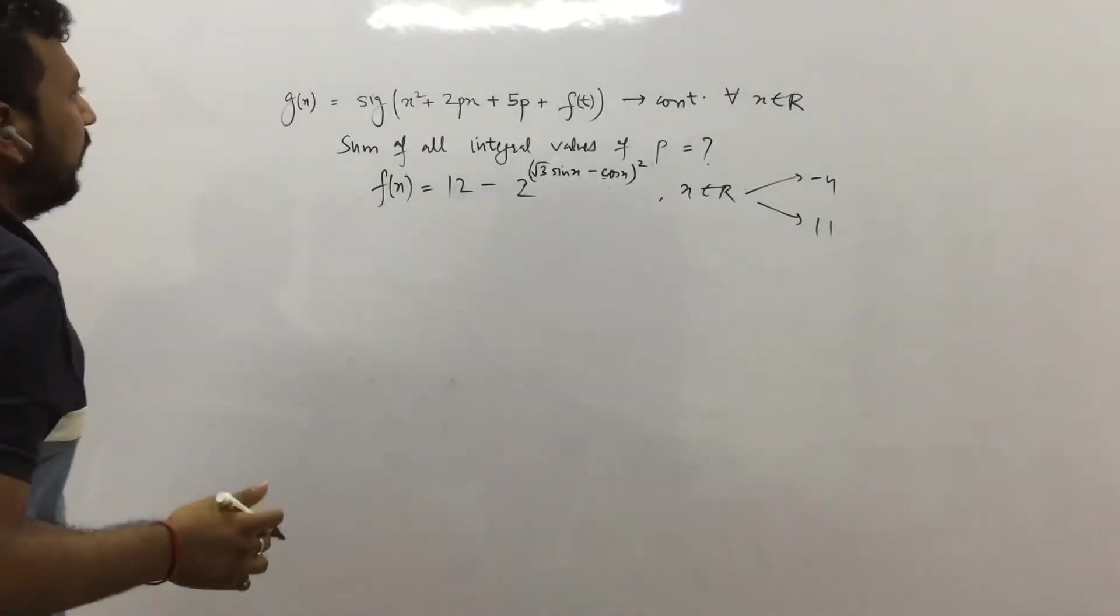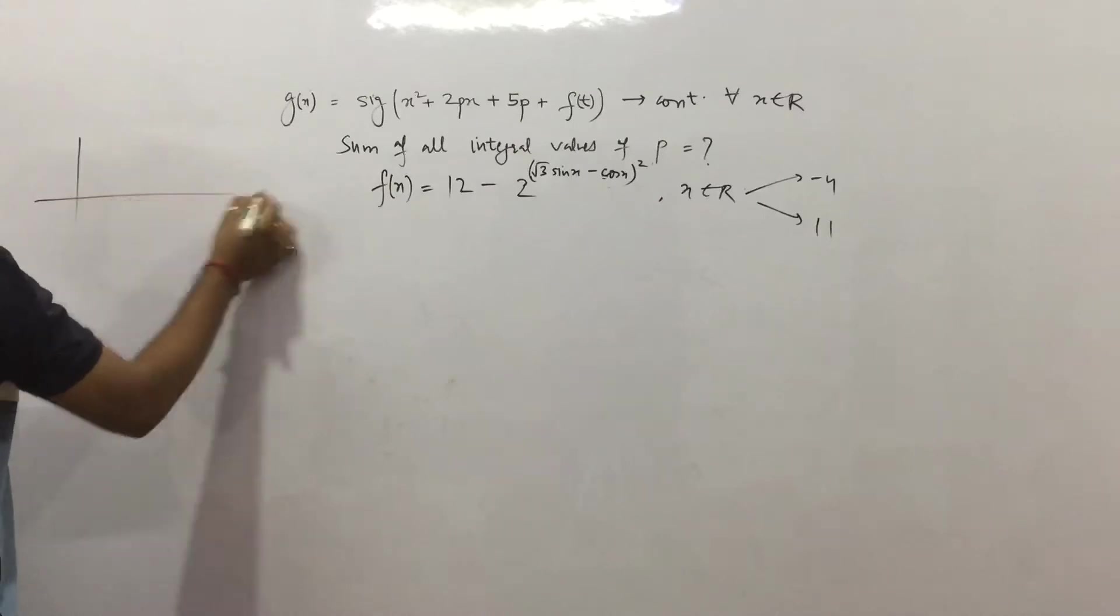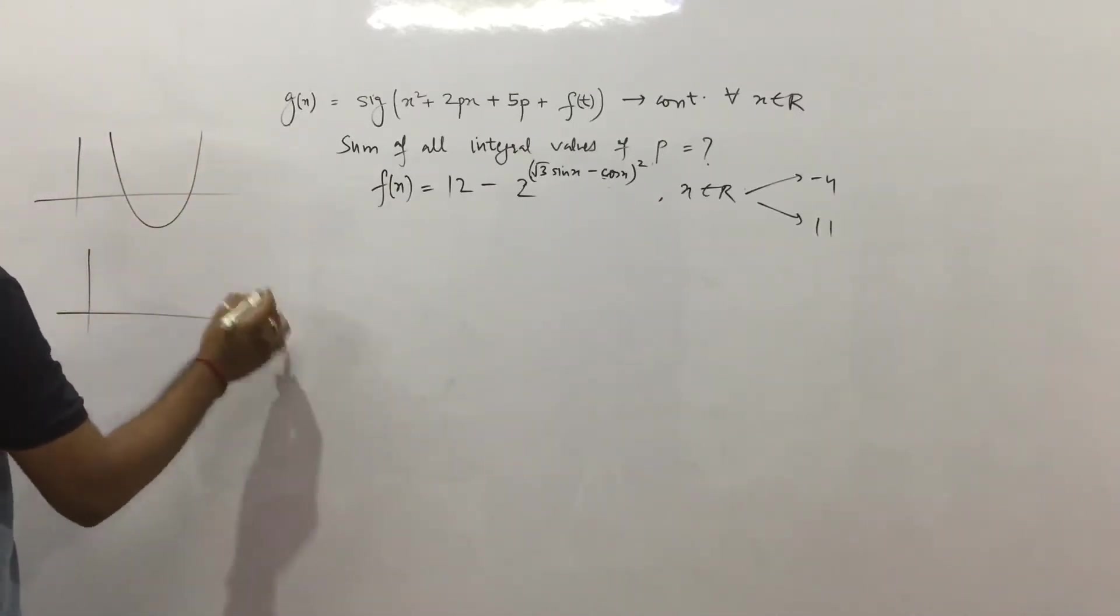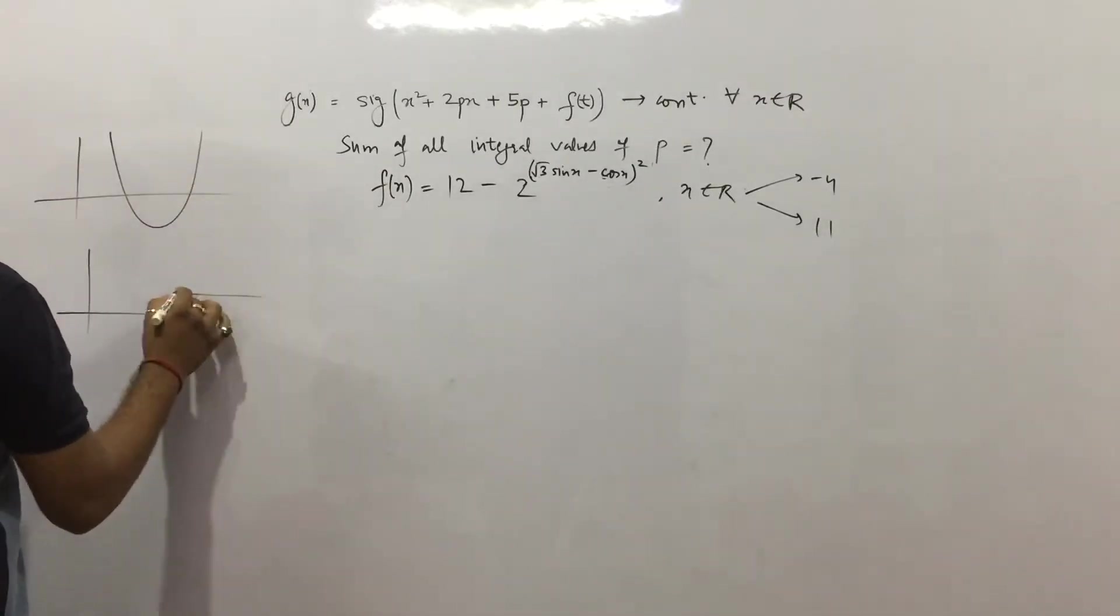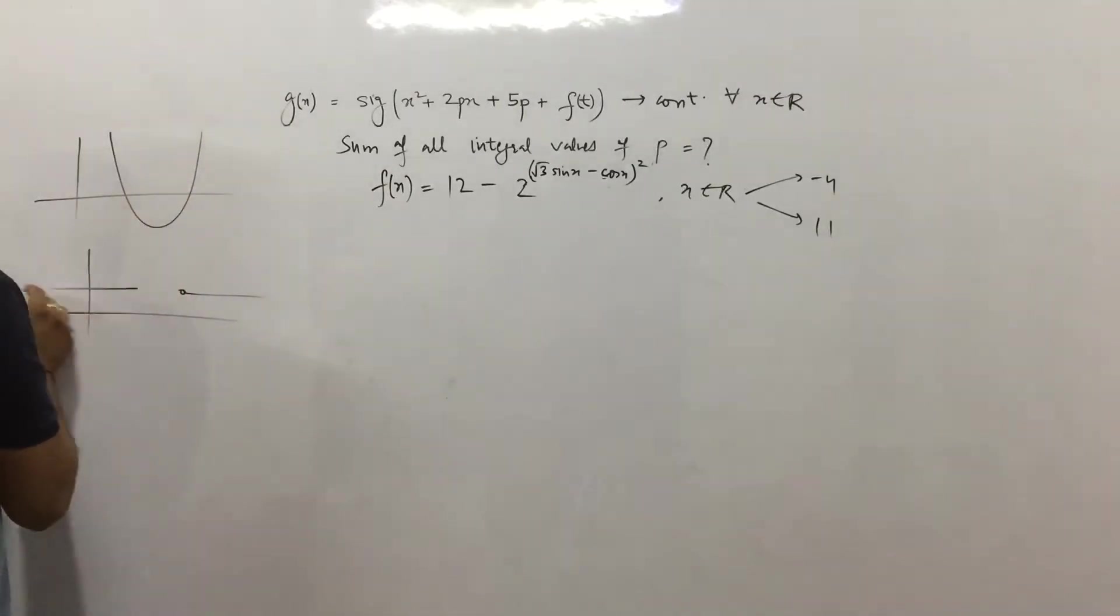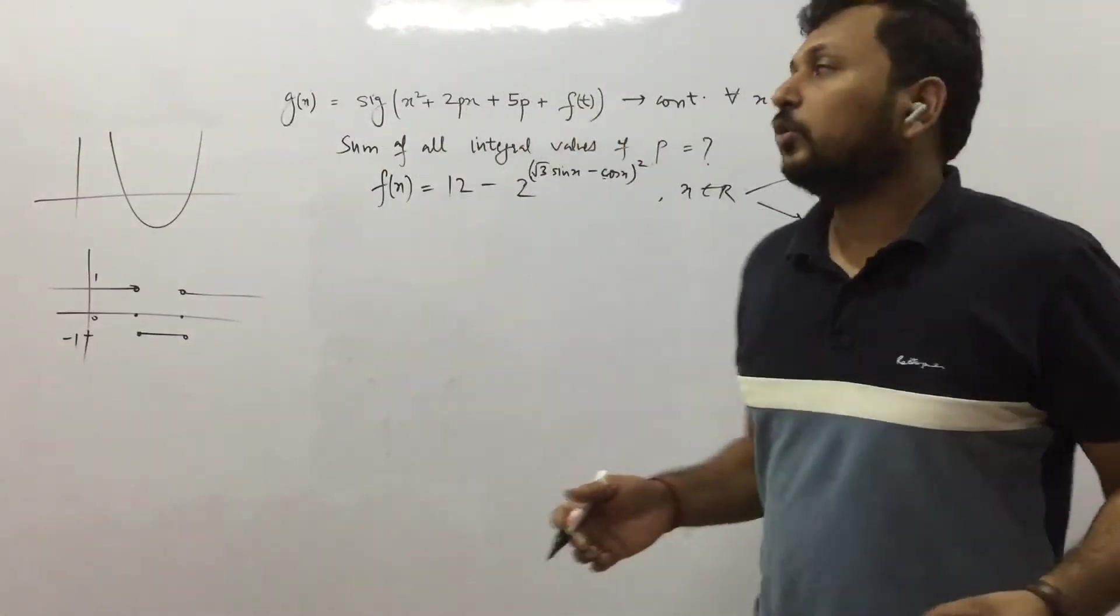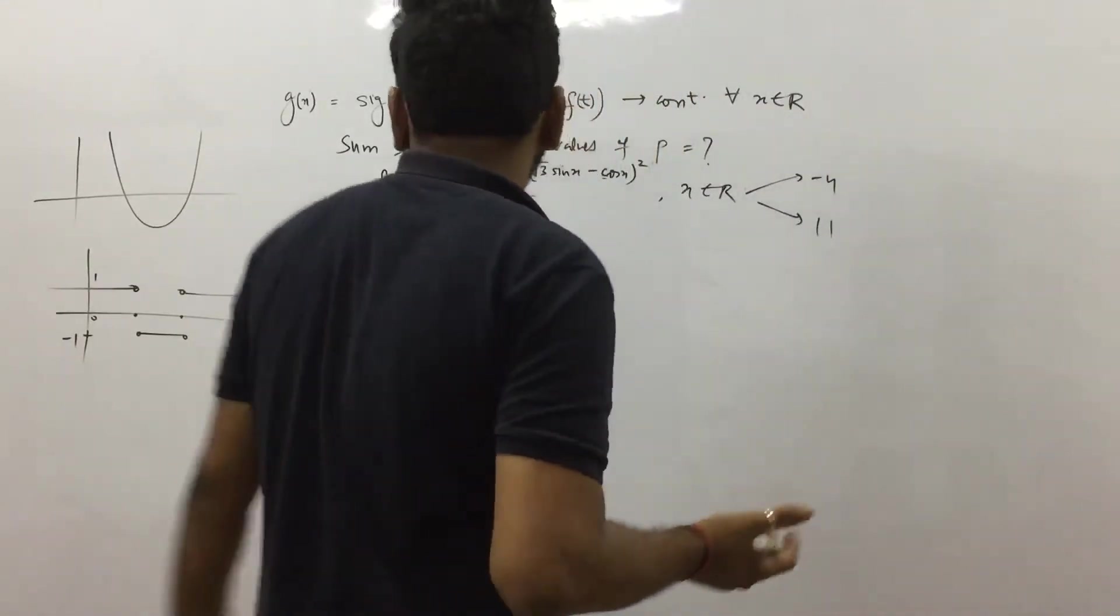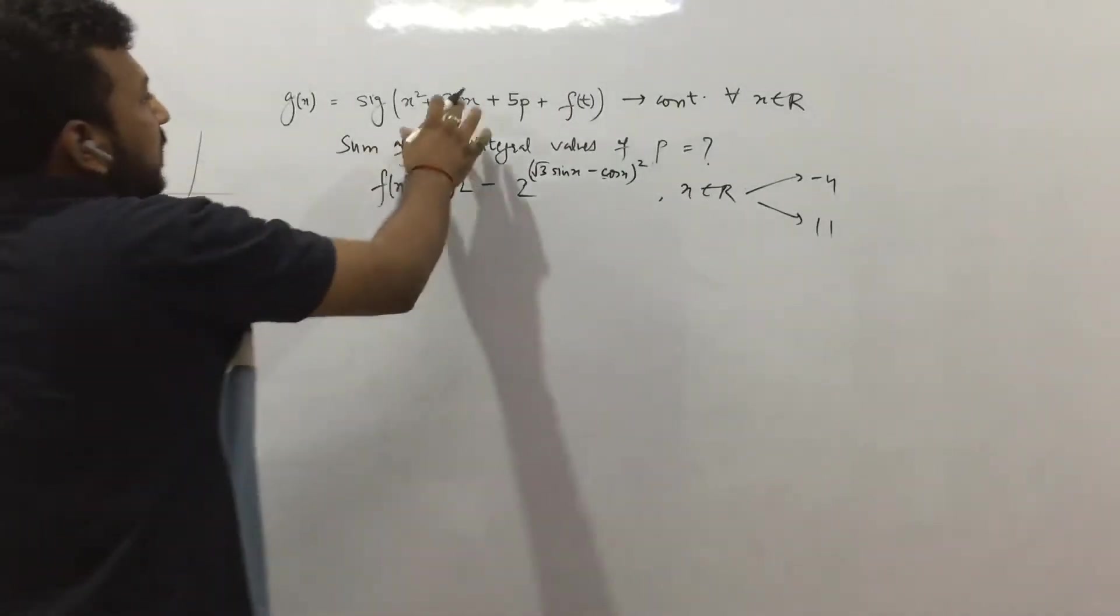Let us see the second thing. What is the meaning of signum? Suppose a graph goes like this. Signum gives you +1 when the graph is positive, that means at these locations. It gives you -1 when the graph is negative, and 0 when the graph is 0. So +1, -1, and 0. These are the values of signum.